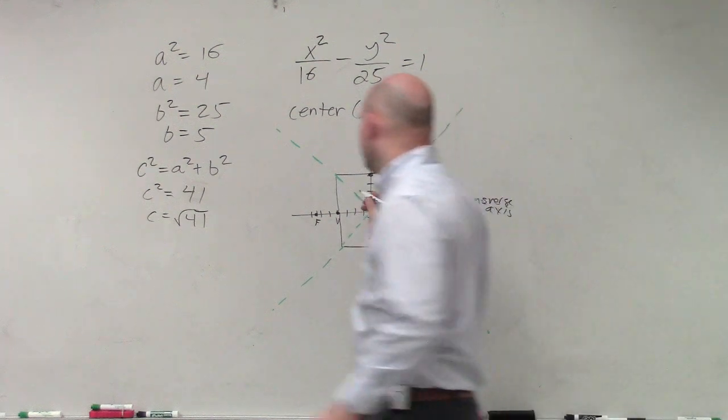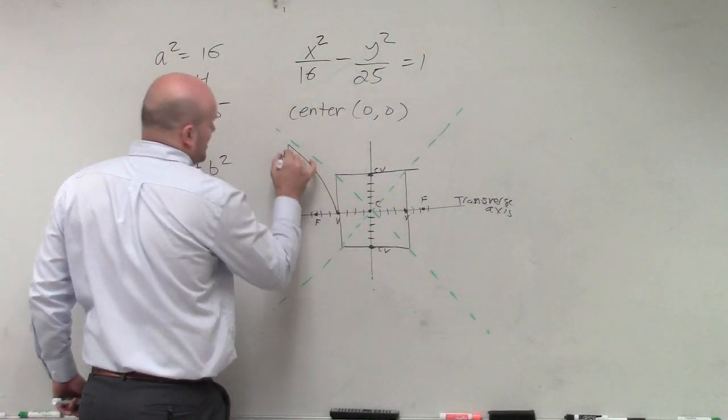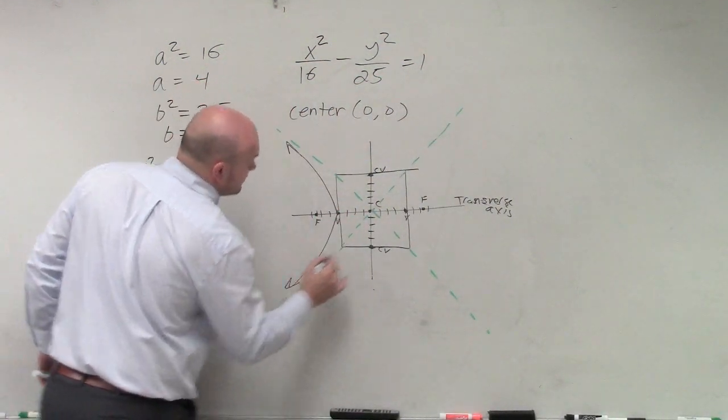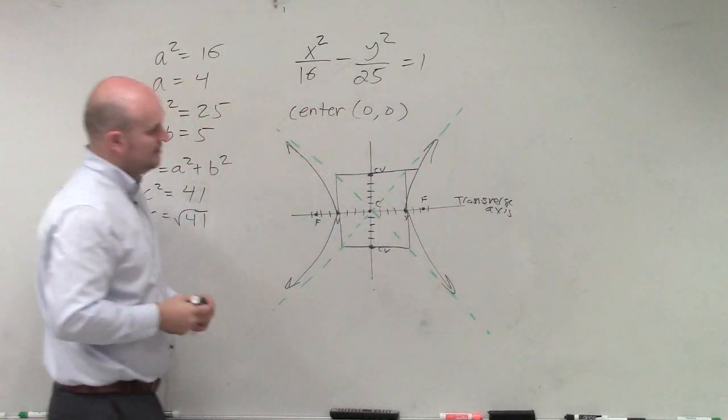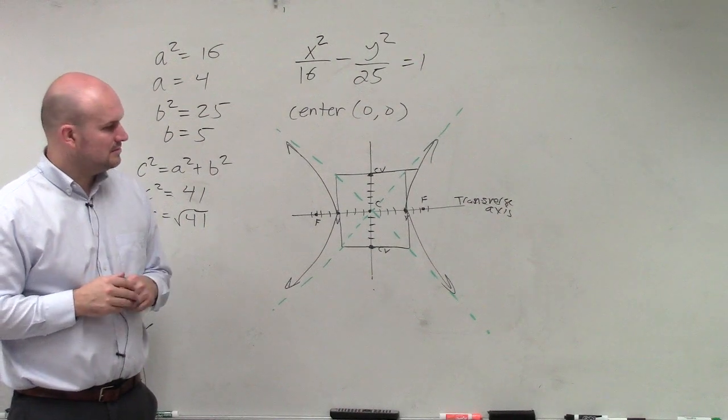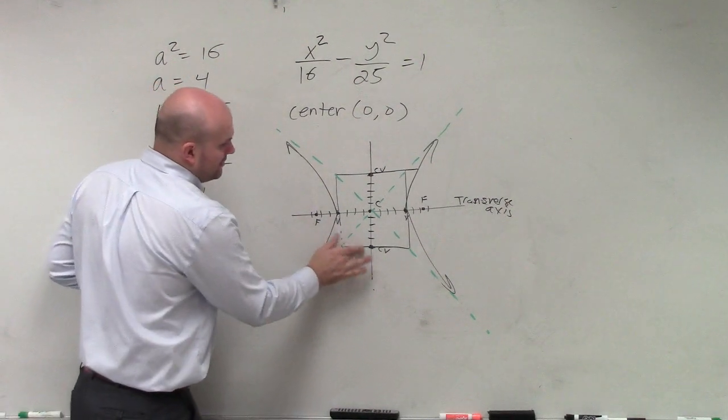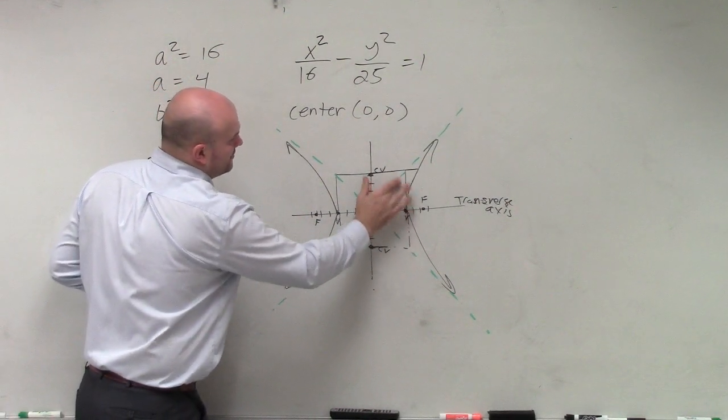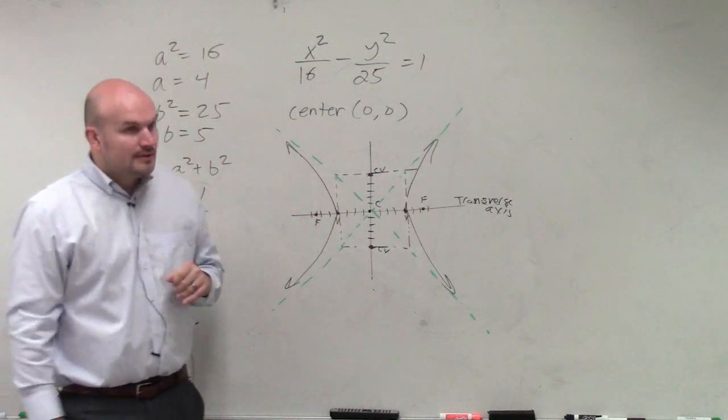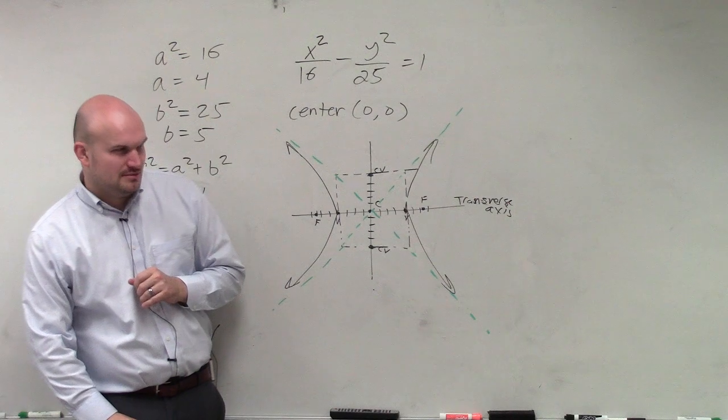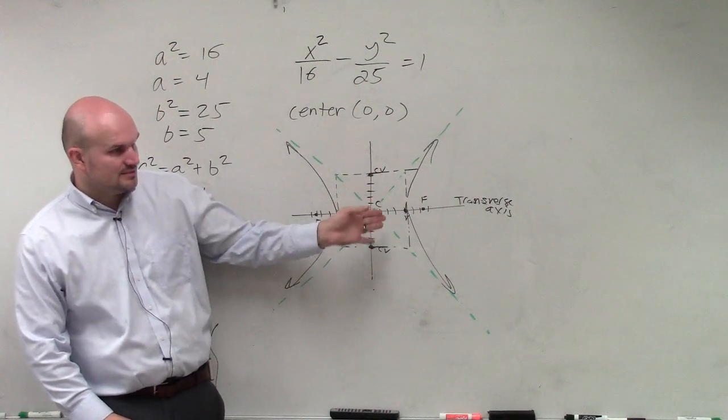Those are your asymptotes. And now, it's much easier for me to sketch my graph of my hyperbola. Because remember, asymptotes is where your graph approaches. All right? Did everybody see that? Got it? This isn't really part of the graph. It's kind of like a dashed line. I'll probably use another color. OK. Does everybody kind of see a little bit? See my hyperbolas? Look pretty.